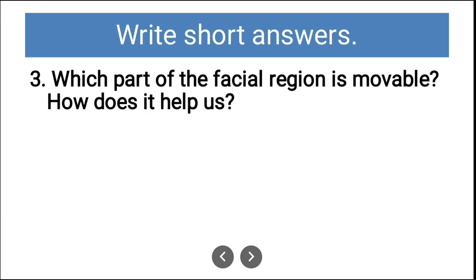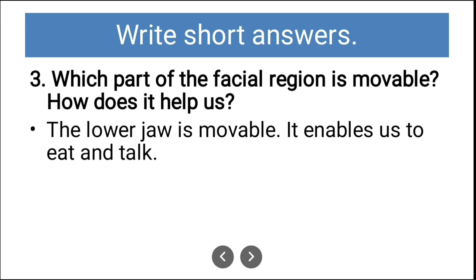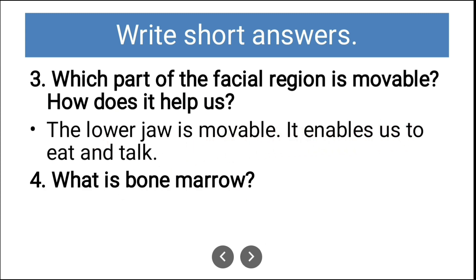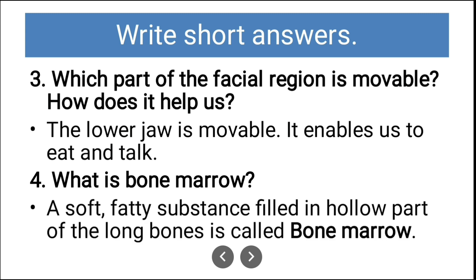Third short answer: Which part of the facial region is movable and how does it help us? The lower jaw is movable and it enables us to eat and talk. Fourth: What is bone marrow? A soft fatty substance filled in the hollow part of a long bone is called bone marrow.